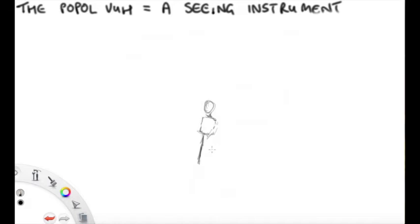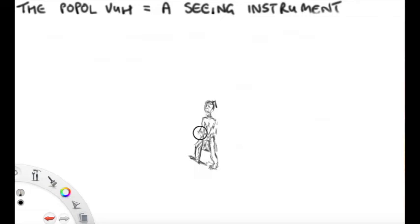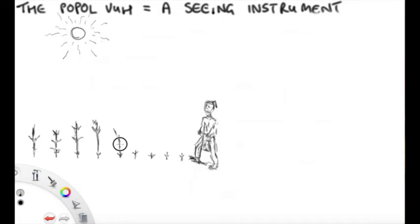But at a much more complex level, and also for Maya initiates, by close study of the text, it's possible to gain an insight into an intimate relationship between the heavens and the earth. The agricultural cycles that are intimately connected to the movement of astral bodies through the sky, planets, stars, as they move.